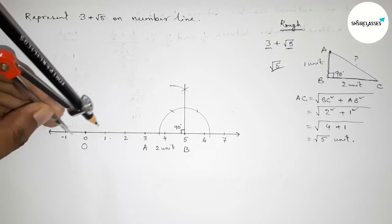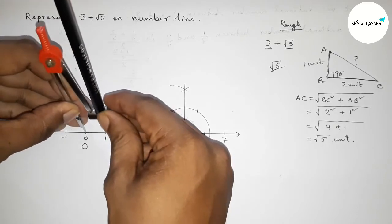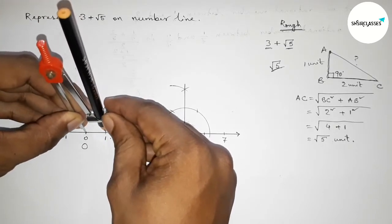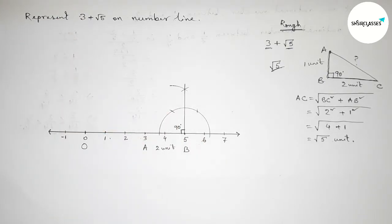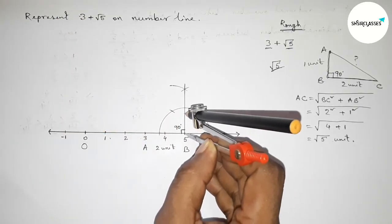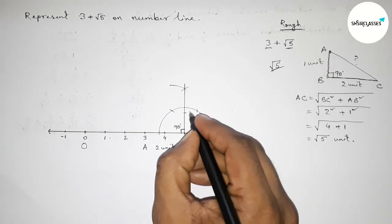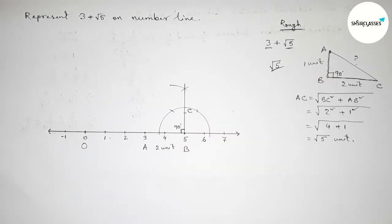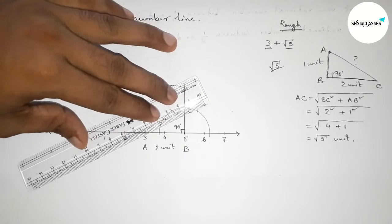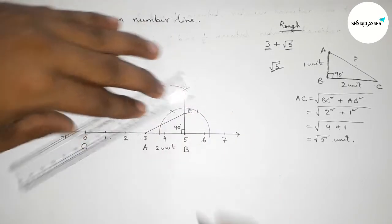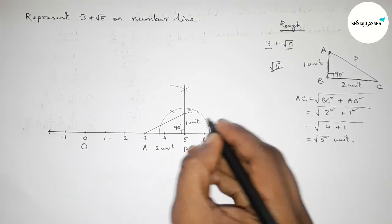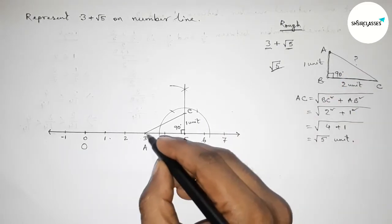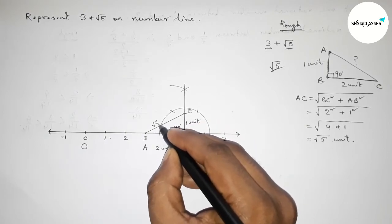Next, taking one unit length. So between any two numbers is one unit length. So taking one unit length by using compass and putting the compass on point B and cut here. So taking point here C, and now joining A and C. This is one unit length, so from this we can say that this is obviously root 5 unit length.